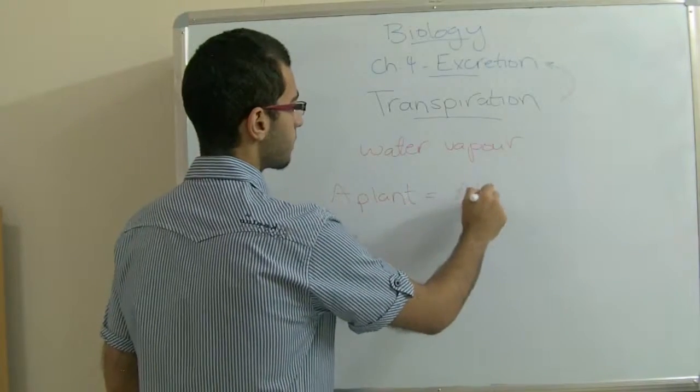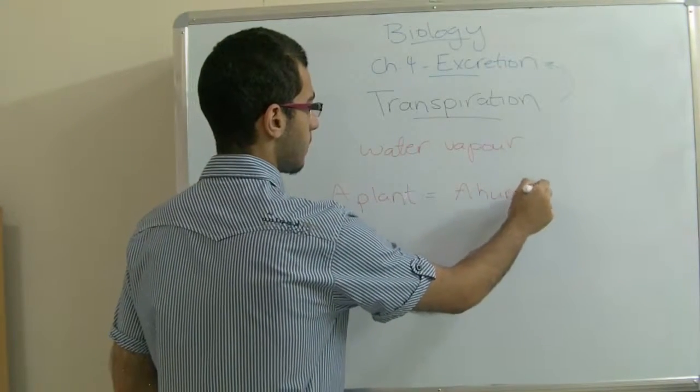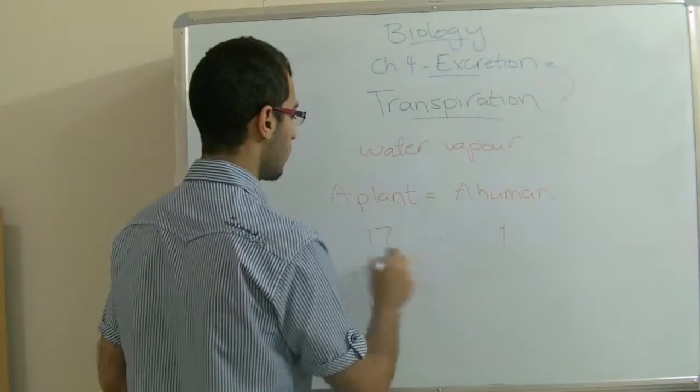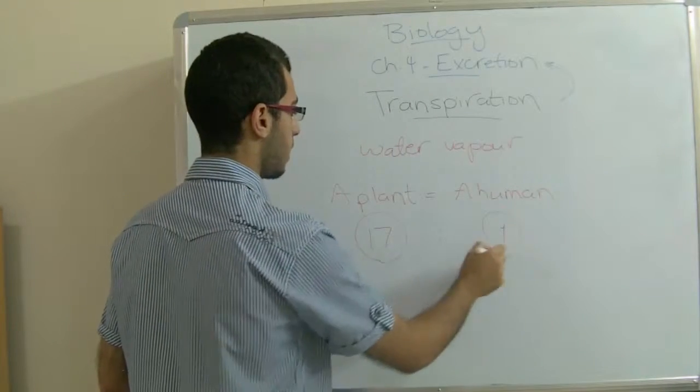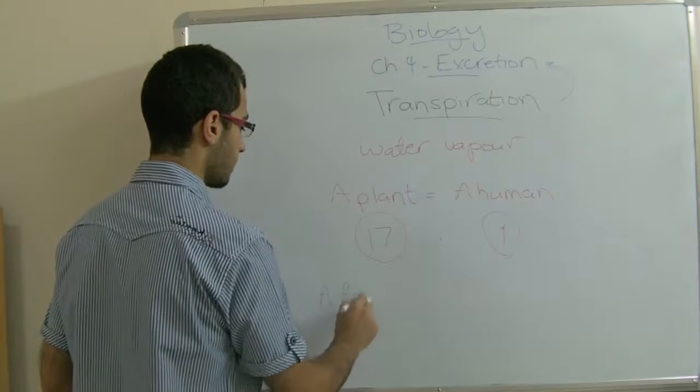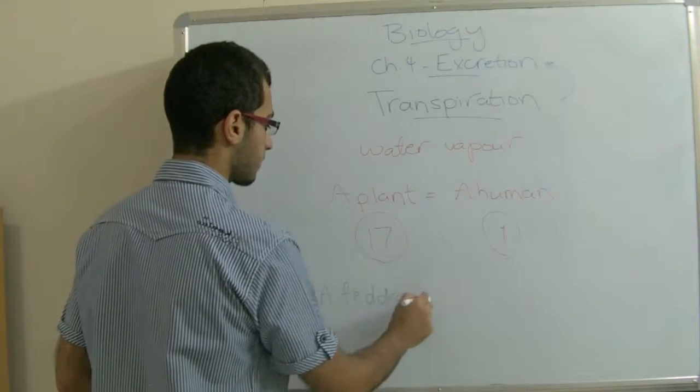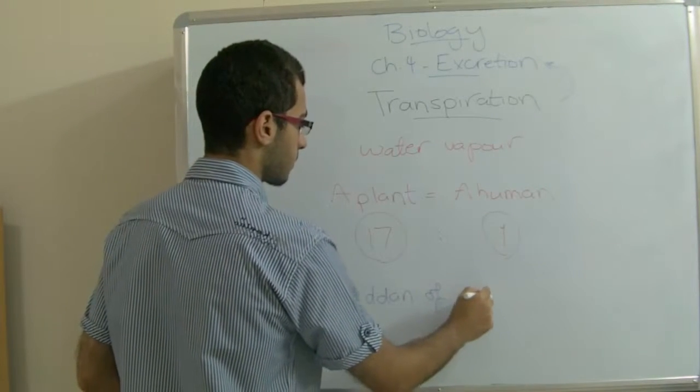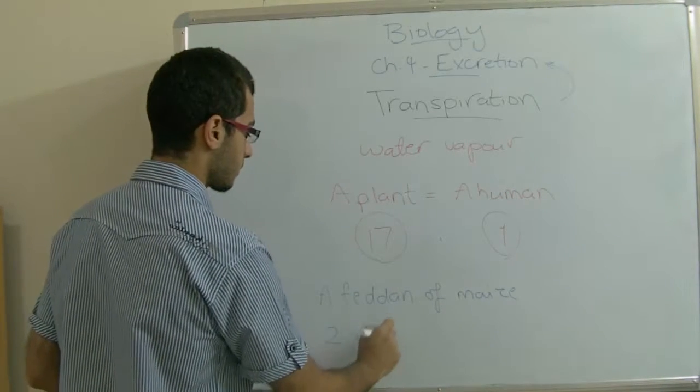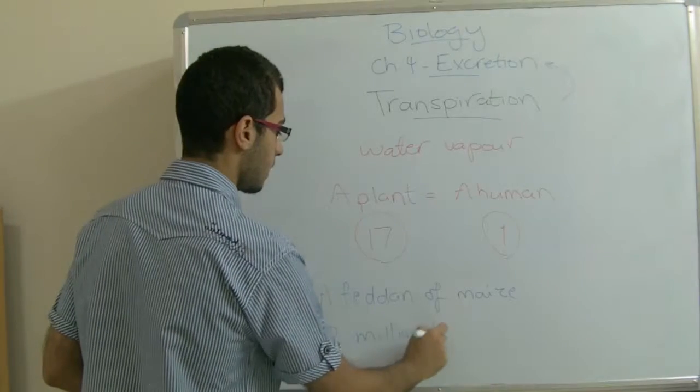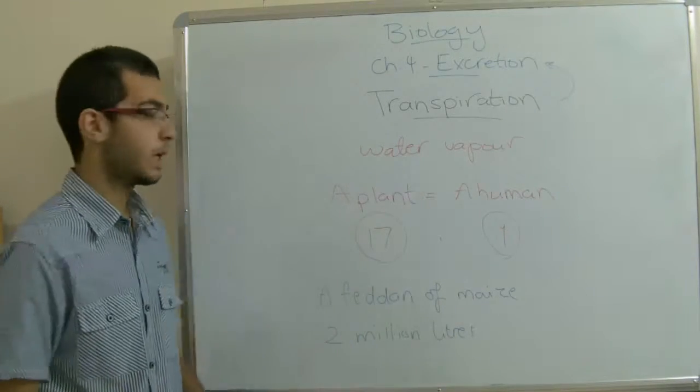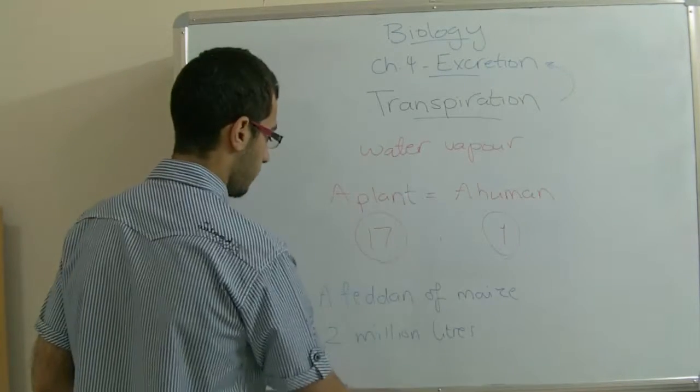Also, a plot of maize needs about 2 million liters of water during its whole lifetime, so this is a great amount of water.